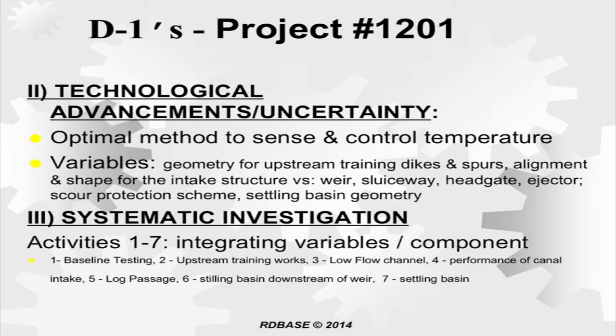What they claimed in court was that the uncertainty was around the optimal method to control flow. They examined variables such as geometry of upstream training dikes, spurs, and alignment of shapes for the input — structures like weirs, sluiceways, head gates, and ejectors — each with different physical parameters. General models existed but were not meeting all objectives on sedimentation or performance, and the claim was that they could improve those models.